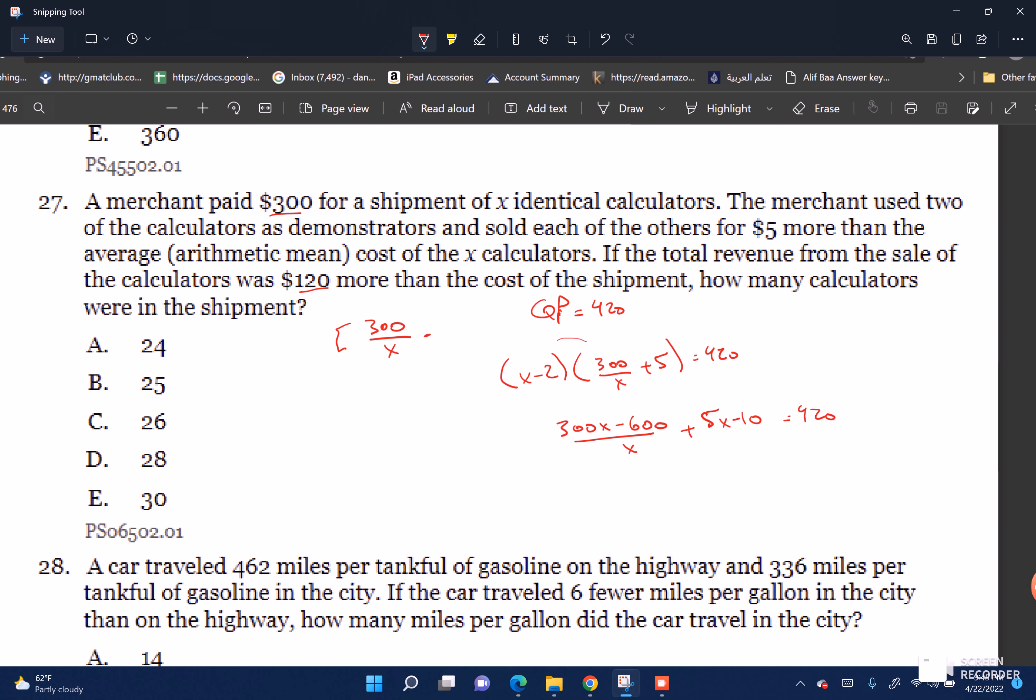I'll get a common denominator. This needs to be 5X squared minus 10X over X. Then I can put all this together: 300X minus 10X is 290X minus 600 plus 5X squared, all over X, equals 420. Multiply both sides by X to clear the denominator, giving us 420X.